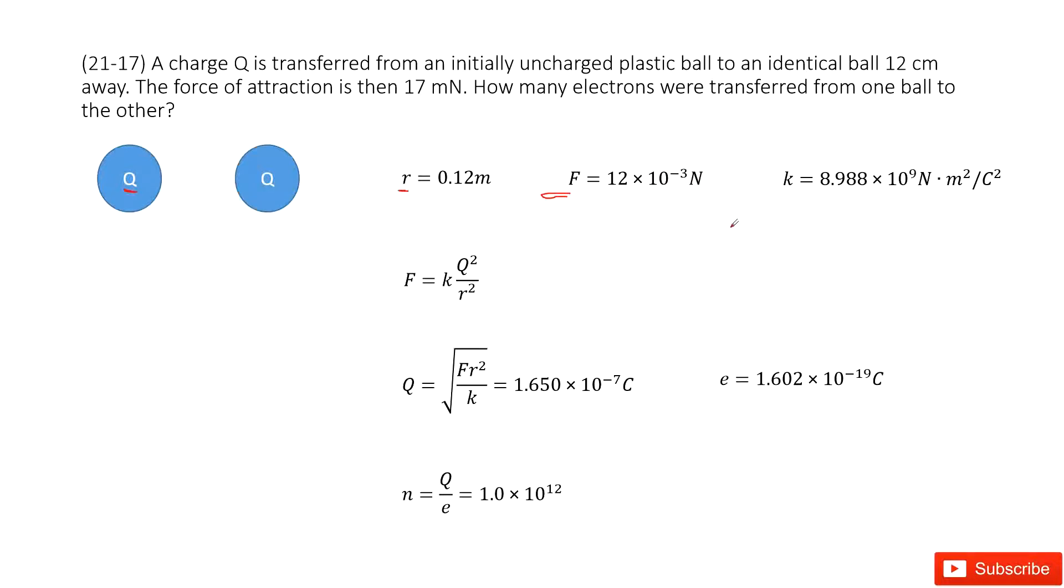Then we can write Coulomb's law. The magnitude of electric force equal to K Q squared divided by R squared. Then in this equation you can see F is given, K is a constant, R is given. So you can get the function for Q.